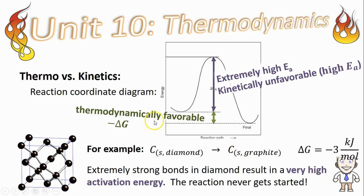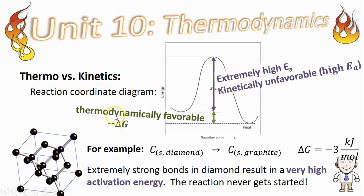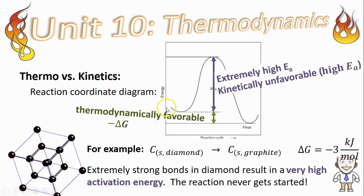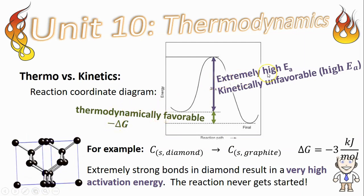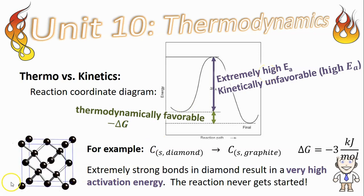Reactions like this that have a negative delta G are said to be thermodynamically favorable, but if they have an extremely high activation energy are kinetically unfavorable.